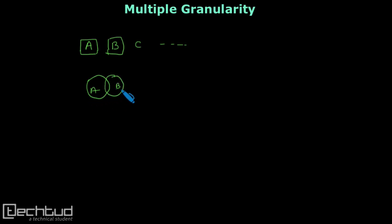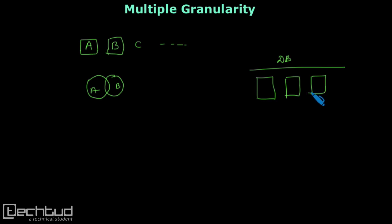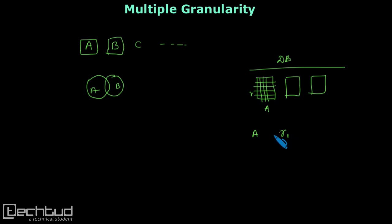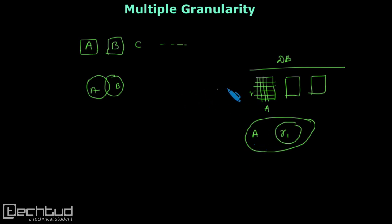These database items a, b, and c are all mutually exclusive. Now imagine a situation — we already know that in a single database we have multiple tables, and in each table we have multiple records, and in each record we have multiple columns or values. So if we consider table a and record r1, these two are not mutually exclusive — r1 is inside table a.